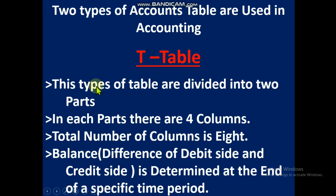Two types of account tables are used in accounting. Number one: T-table. In a T-table, the table is divided into two sides — one side is debit and the other side is credit. In each part there are four columns, so in T-table format there are eight columns total. Important MCQ: in a T-table format, debit side has four columns, credit side has four columns, total eight columns.